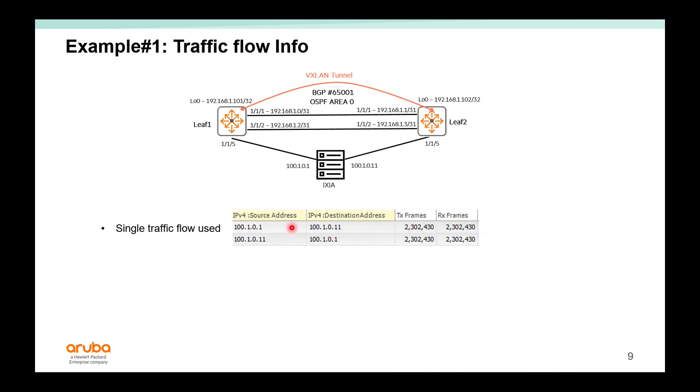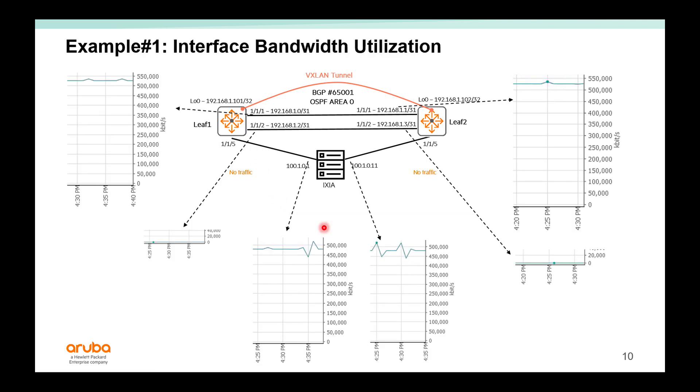Here we have the single traffic flow information - 100.1.0.1 and 100.1.0.11 send traffic between them over the tunnel. In this example I'm sending 500 meg of traffic between them and it receives it. But let's look at the physical links - you can see one of the links has all the traffic. Link 1/1/1 has all the traffic, 1/1/2 has no traffic. Same for 1/1/1 on leaf 2 - all the traffic is there, but 1/1/2 on leaf 2 has no traffic. So there is no load sharing in this case because it's only one flow - all traffic is sent on one physical link.